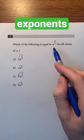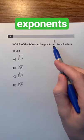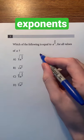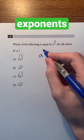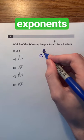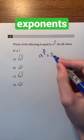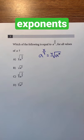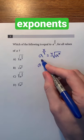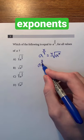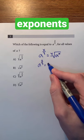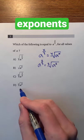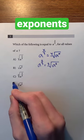Which of the following is equal to a to the power of 2 thirds for all values of a? You have to know the exponent rule which states that a to the power of x over y is equal to the y root of a to the power of x. Using this rule, we can see that a to the power of 2 thirds is equal to the cube root of a squared, which is d, so d is the correct answer.